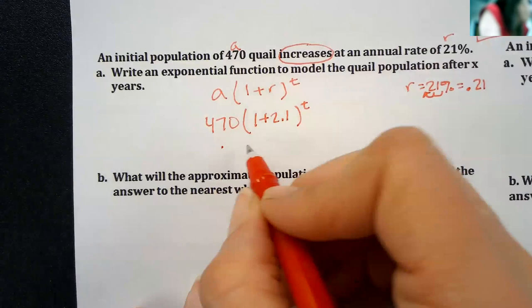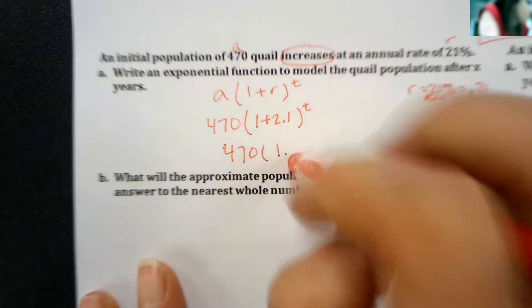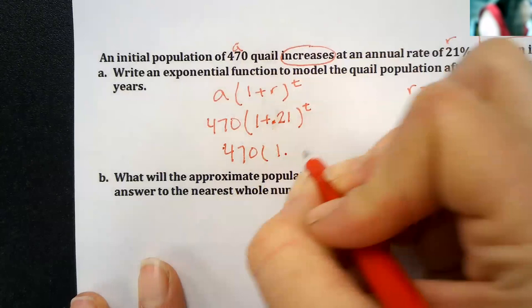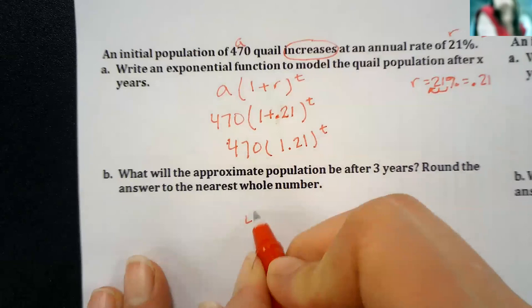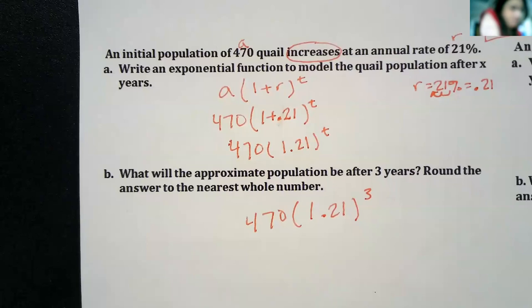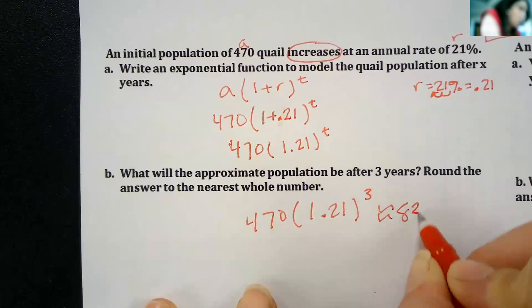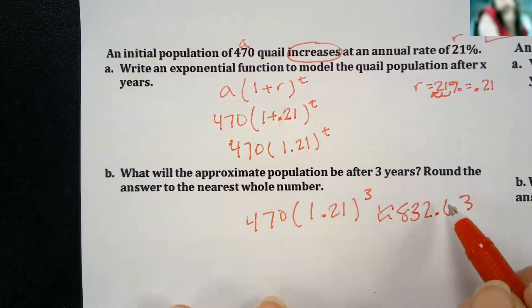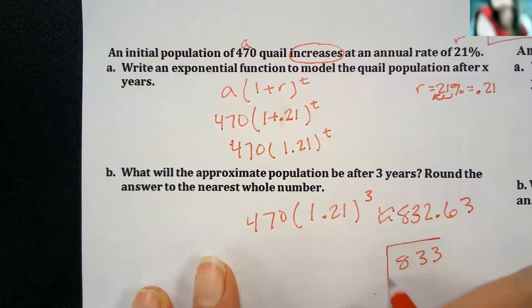And it wants to know just the model. That would just be this. That's my formula. If I plug into it, it says for three years, what do I get? Approximately 832.63. Now, it wouldn't make sense to have part of a quail. So we're going to round it to the nearest whole number. That would be 833 quail.